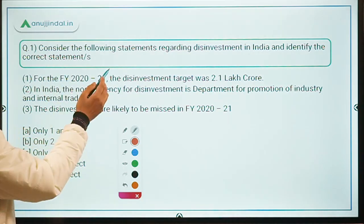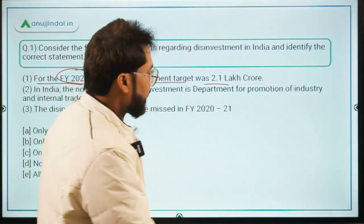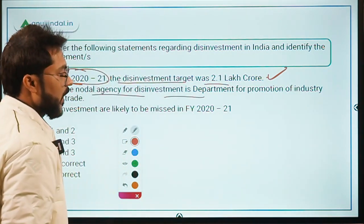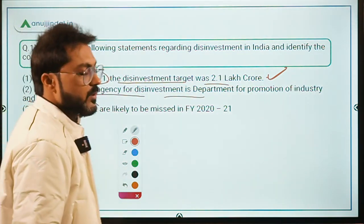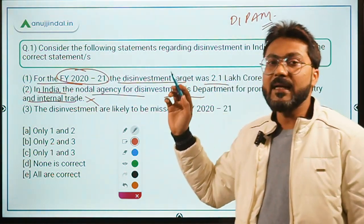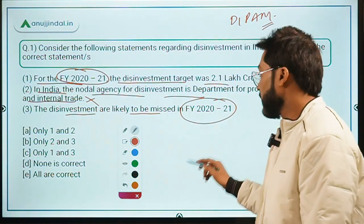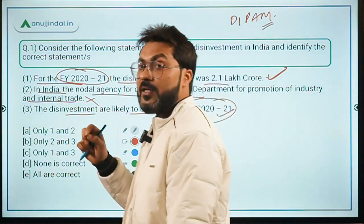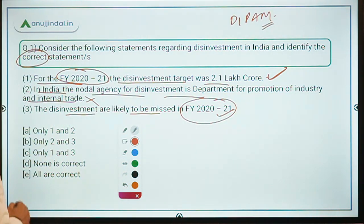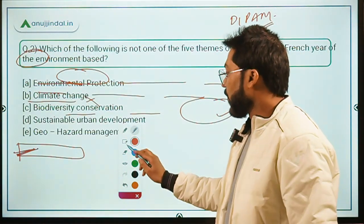Now let's evaluate the statements. Statement one — the disinvestment target for FY2021 was 2.1 lakh crore — is absolutely correct. Statement two — that the nodal agency is DPIIT (Department for Promotion of Industry and Internal Trade) — is incorrect; it is DIPAM. Statement three — that the disinvestment target is likely to be missed in FY2020-21 — is absolutely correct, as only 3% has been achieved. Therefore, Option C (only statements one and three) is the correct answer.